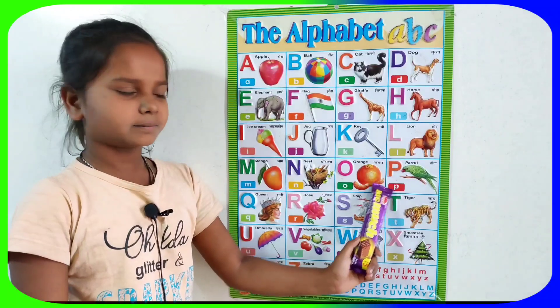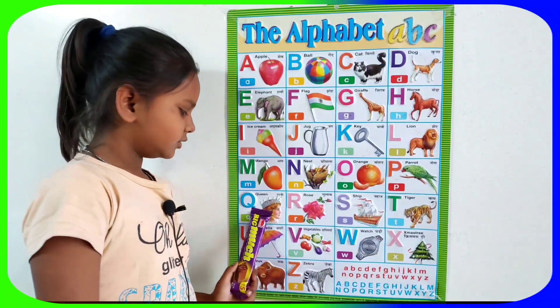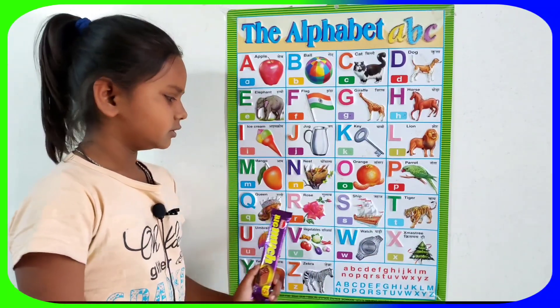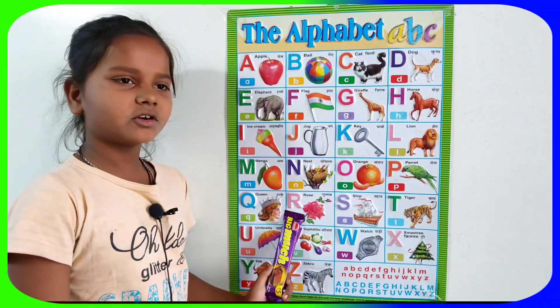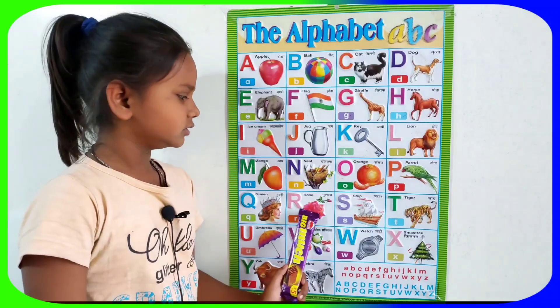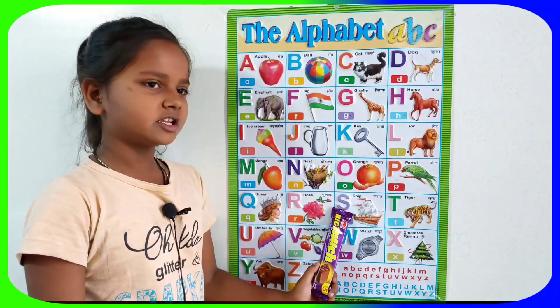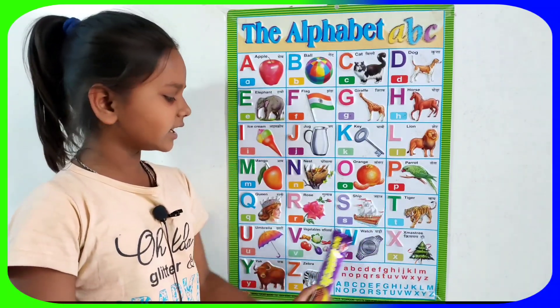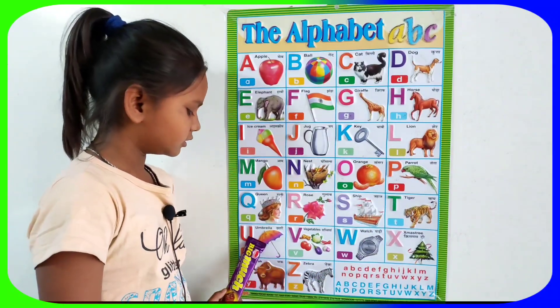P for parrot, Q for cute, R for roach, S for sheep, T for tiger.